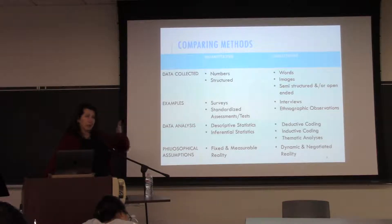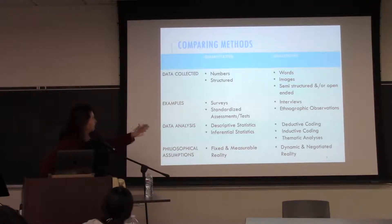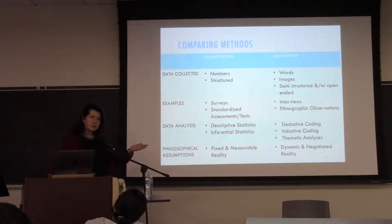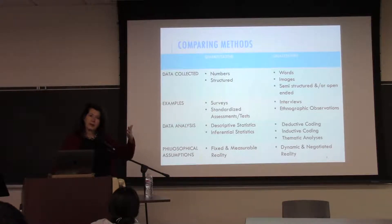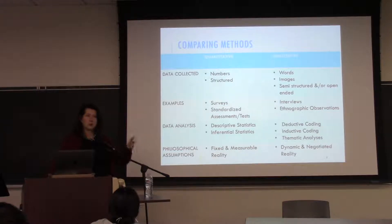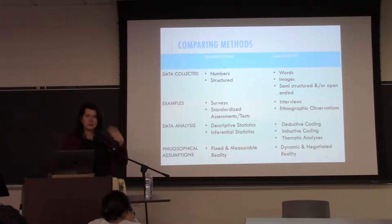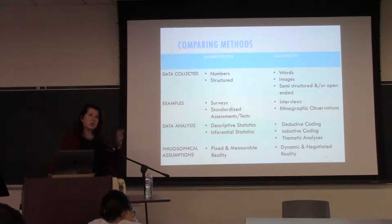One thing is the data you gather; another is how you analyze it. Quantitative research tends to draw on descriptive statistics — the mean, median, range, analysis of variance, chi-squares. You don't have to remember all of these. Inferential statistics are more predictive — multiple regression analysis, structural equation modeling are examples. Qualitative data tends to draw on coding.